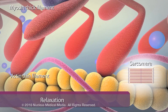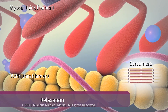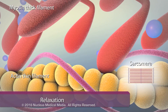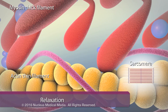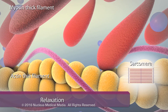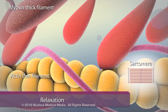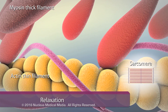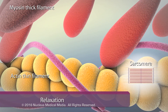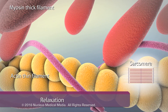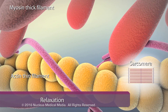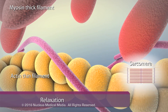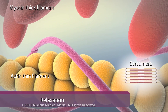The fourth step of muscle contraction is relaxation, in which calcium ions return to the sarcoplasmic reticulum and break the myosin-actin bonds. The cross-bridges disengage and the sarcomere lengthens, resulting in relaxation of the muscle and the end of the contraction.